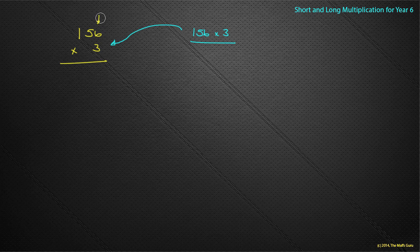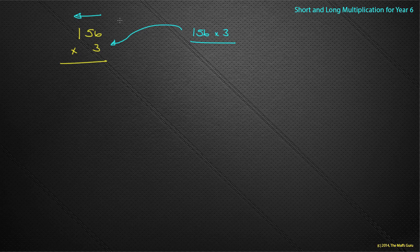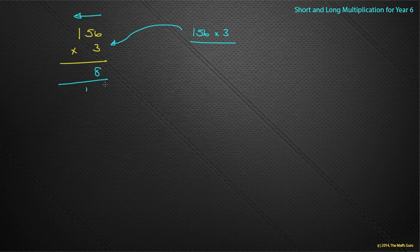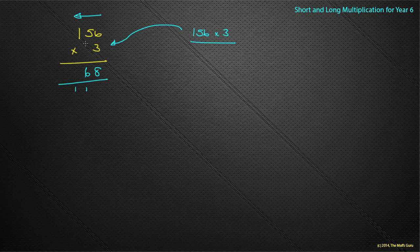I was always told to start at the units and work along the number. So we do 3 times 6, which is 18. I put the 8 here, and I put a little 1 underneath the tens column. In Australia, you're taught to put the 1 up top — to me that would make it look like the number 15. I'll do it both ways. So 3 times 5 is 15, add the 1 gives 16 — there's the 6 and carry the 1. And 3 times 1 is 3, add the 1 is 4. So the answer is 468.